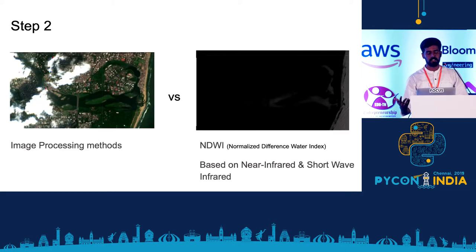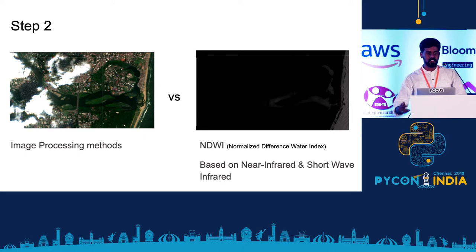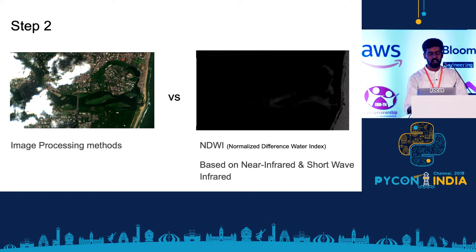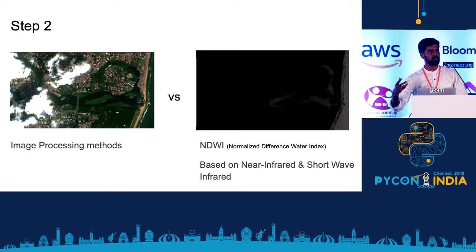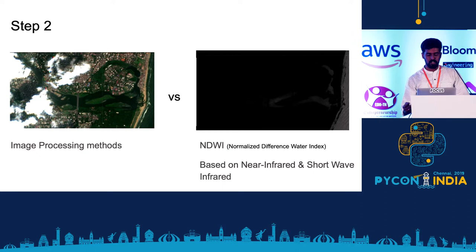I had two options going forward: image processing or using the bands available in satellite imagery. I couldn't do image processing because of the spatial resolution and the noise involved. So I had to stick with Normalised Difference Water Index (NDWI), which is based on satellite image bands — different coloured images taken with sensors using near-infrared and shortwave infrared inputs.